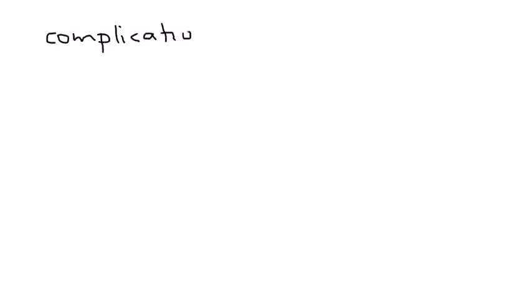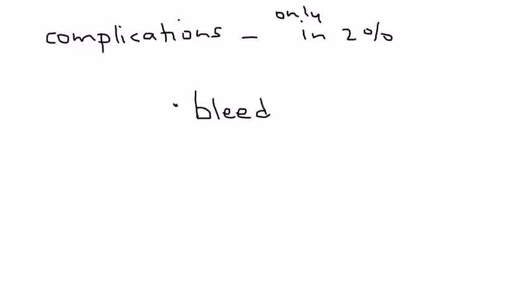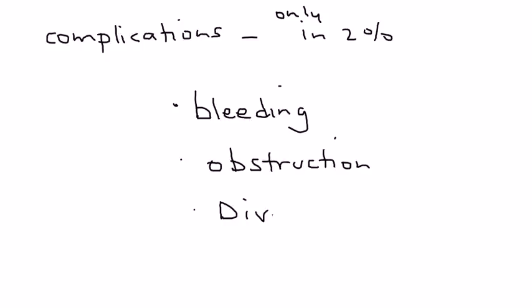If Mechal diverticulum does occur, the complications only happen in 2% of those who have it, making them quite rare. But when they do occur, complications include bleeding, obstruction, inflammation, diverticulitis, and tumors as well.